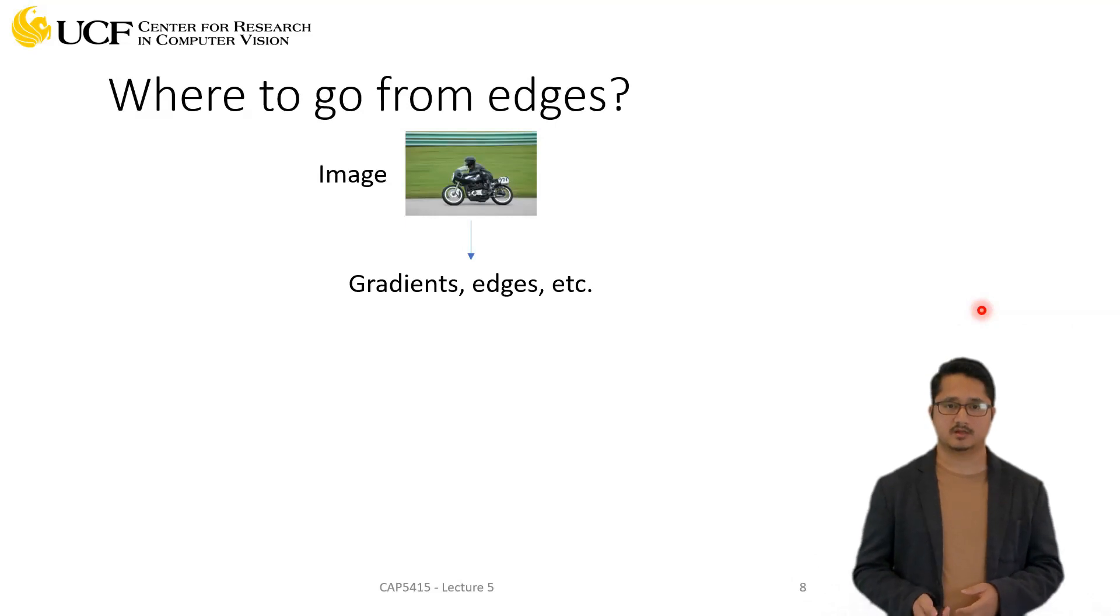In the previous lectures we've been talking about filtering. We've studied how gradients can be used to detect these edges, and we've covered different algorithms to detect edges. So the next step is, once we have these edges, can we extract some meaningful features?